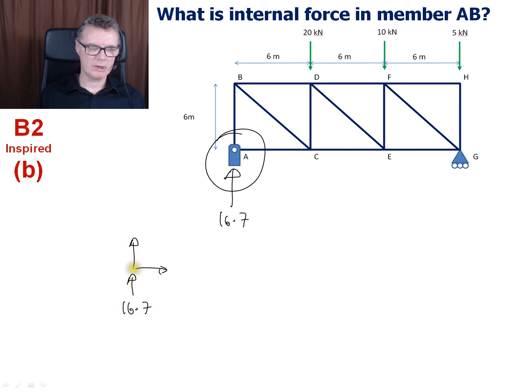16.7 coming up. We just need to make our internal forces point away from the joint. So we've got an AC member here and we've got an AB member here. Provided you follow your algebra, sum your forces going upwards.